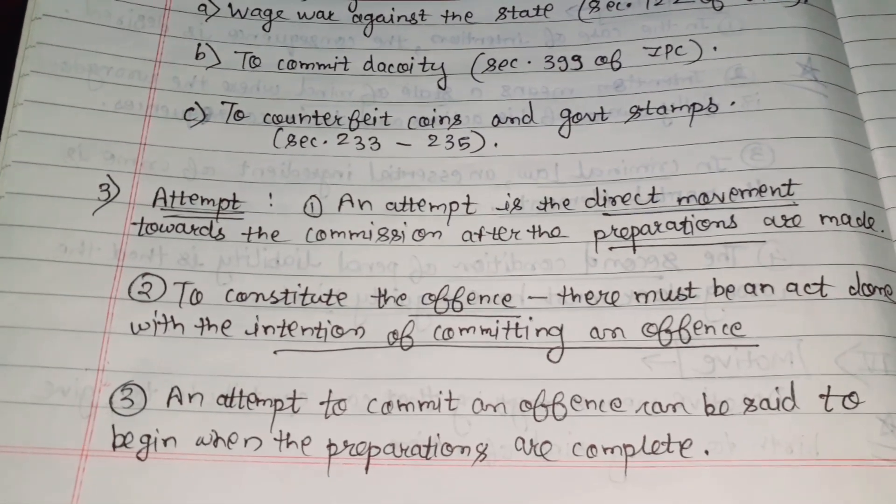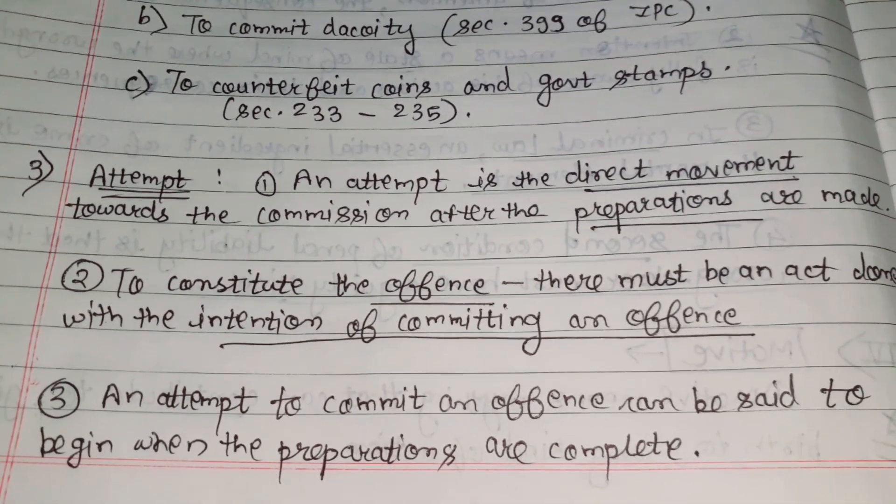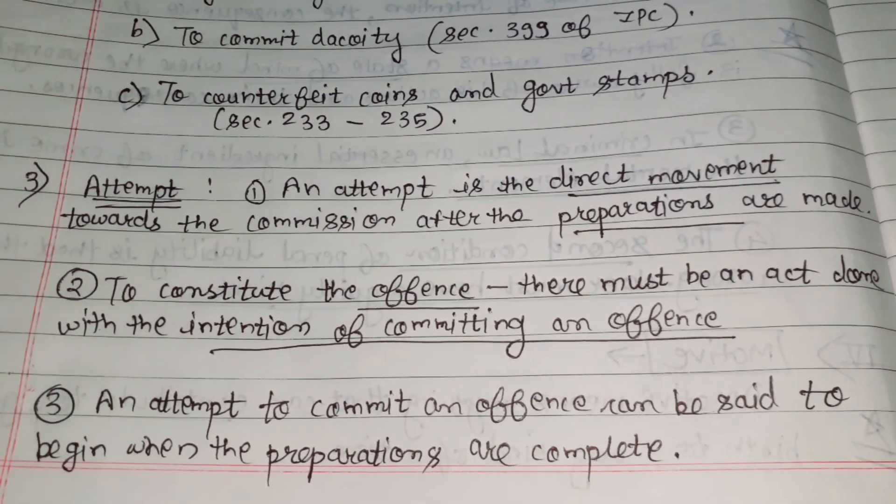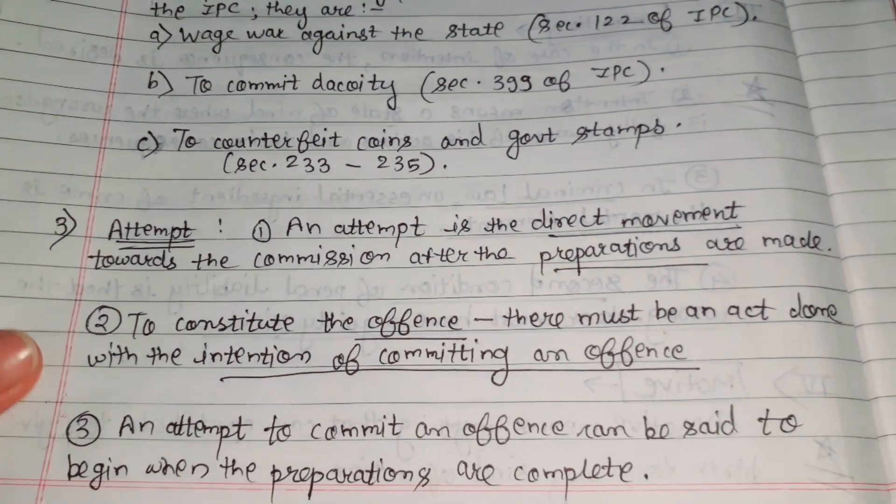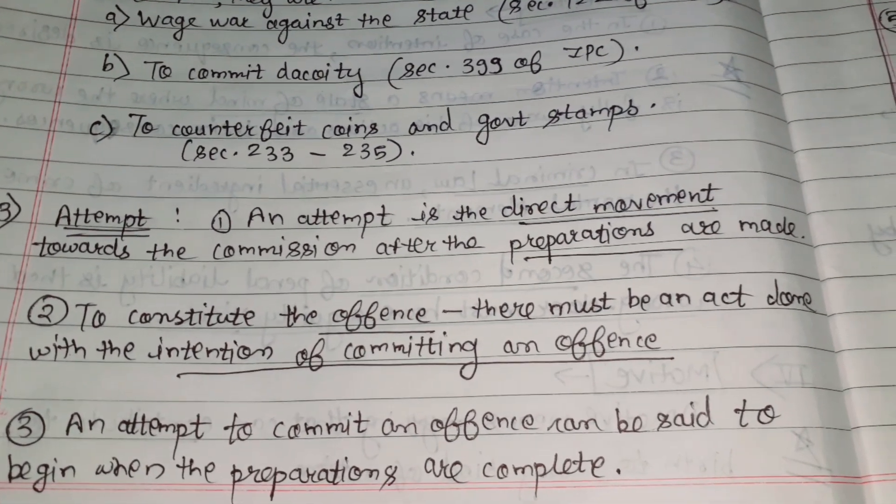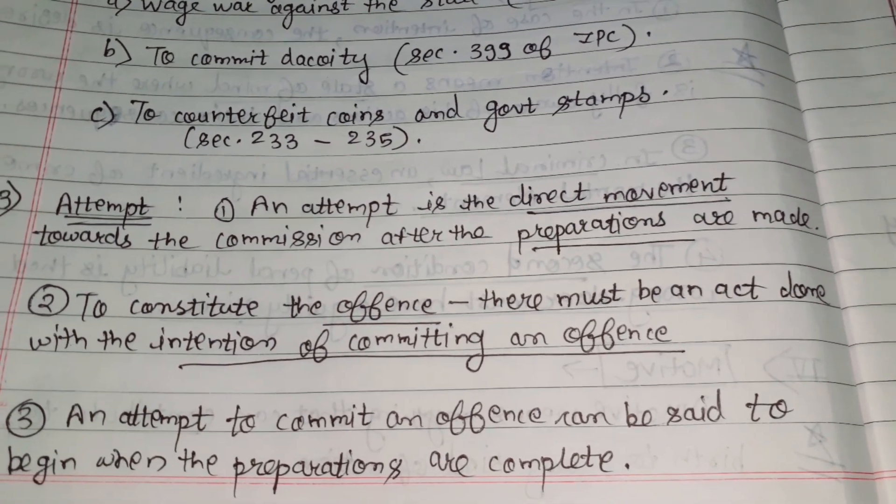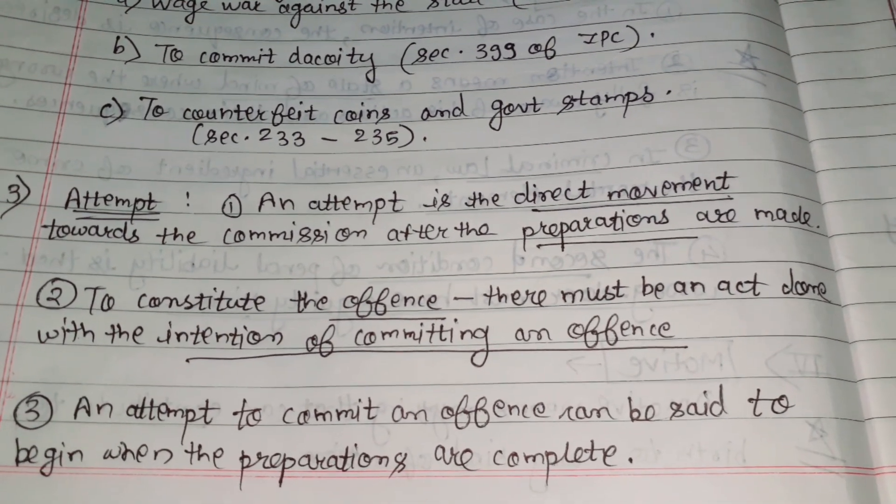Now the third stage in the commission of the crime is attempt. An attempt is a direct movement towards the commission. After the preparations are made, to constitute the offense there must be an act done with the intention of committing an offense. To constitute an offense, first ingredient is intention and second is the wrongful act.